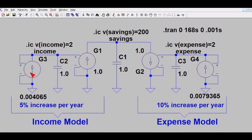Now the G3 is a current source that's going to provide a 5% increase per year on the charge on capacitor C2, and this is the gain factor to do that. Now this gain factor we got from our table of interest rate versus gain factor that you can find at economicsimulations.com, click on tutorial, then click on modeling interest, and you'll get that table.